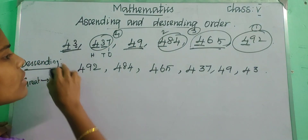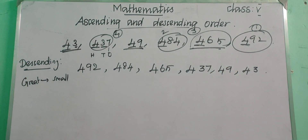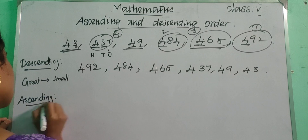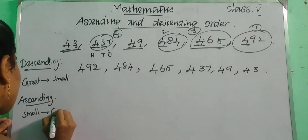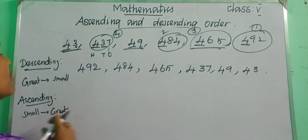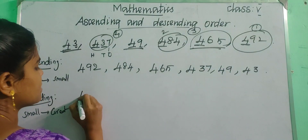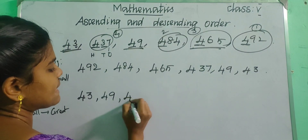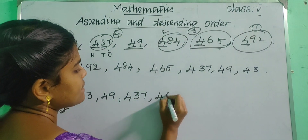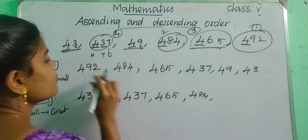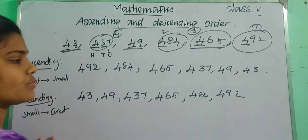How will you write the ascending order for these same numbers? Descending means great to small, ascending means small to great. Simply the reverse order of the descending order is the ascending order. So: 43, 49, 437, 465, 484, and at the last four hundred and ninety-two.